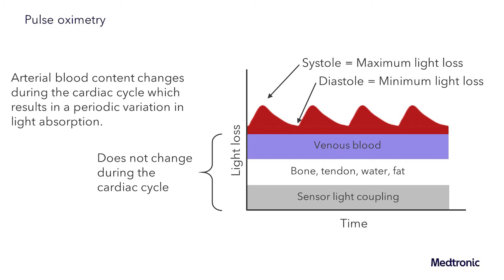There are constants within this formula for venous blood, bone, tendon, water, and fat, as well as sensor light coupling. These do not change during a normal cardiac cycle, but we will talk about some limitations that can impact this a little bit later.